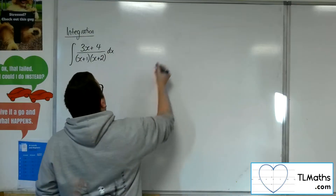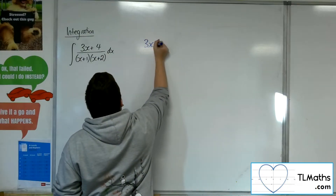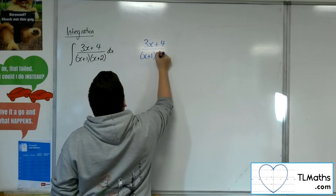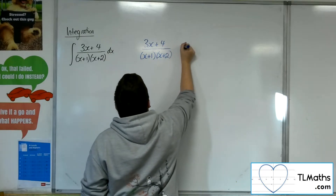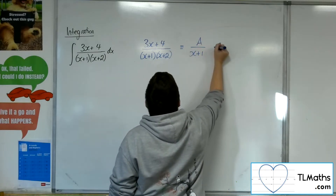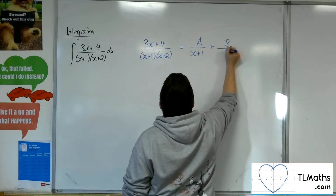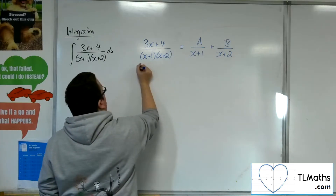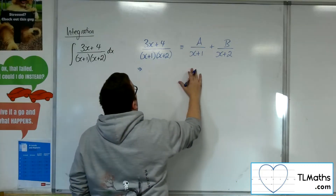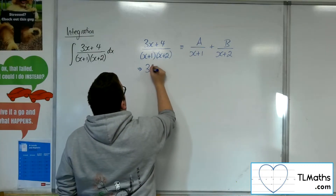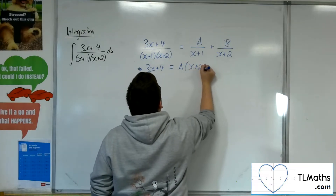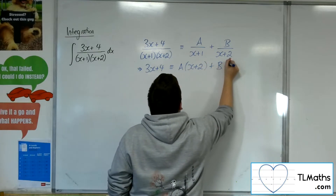What I want to do is to first of all write (3x + 4) over (x + 1)(x + 2) in the equivalent form of A over (x + 1) plus B over (x + 2). I'm going to multiply both sides by (x + 1)(x + 2), so 3x + 4 is equivalent to A lots of (x + 2) plus B lots of (x + 1).